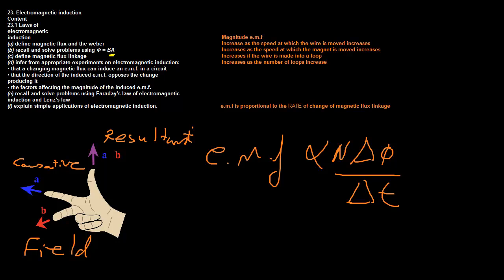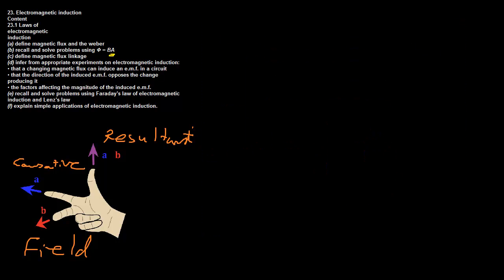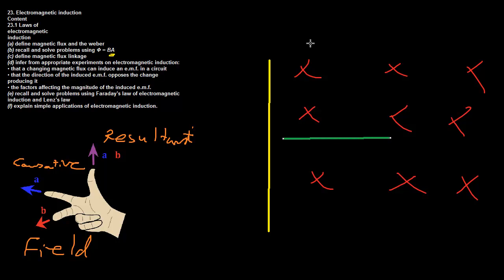Then we have Lenz's Law. Lenz's Law is actually very simple — it makes a lot of sense if you think about it. I'm going to draw my magnetic field again so you'll be able to see Lenz's Law for yourself. Here's my wire, and say I cause motion in that direction. I'll draw my little proton on here again — here's my proton, and I'm giving it velocity in that direction. So let's put our index finger that way, our middle finger into the page.